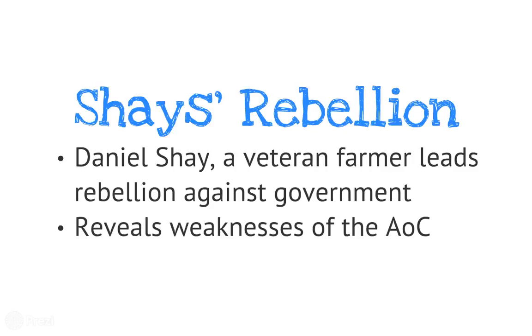Daniel Shays got incredibly upset and led a group of farmers running around the country causing devastation. Nobody could stop him because there was no leader. This revealed terrible weaknesses in the Articles of Confederation. George Washington got on his horse, went up there, told Daniel Shays to stop, and Shays agreed — but the problems with the AOC still needed to be addressed.